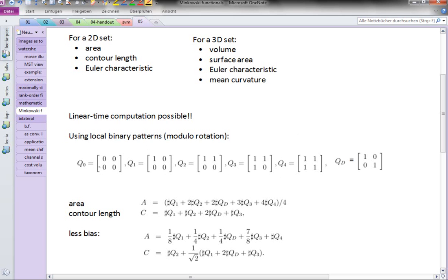You can look for how often these patterns appear. A very simple rule to compute the area of the foreground would be: these are defined only up to rotation, so q1 is the one shown here, but q1 would also be that one, and there are two other versions still.